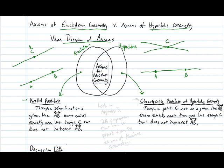The parallel postulate says there is exactly one line through C, while the characteristic postulate of hyperbolic geometry says there exists more than one line through C.